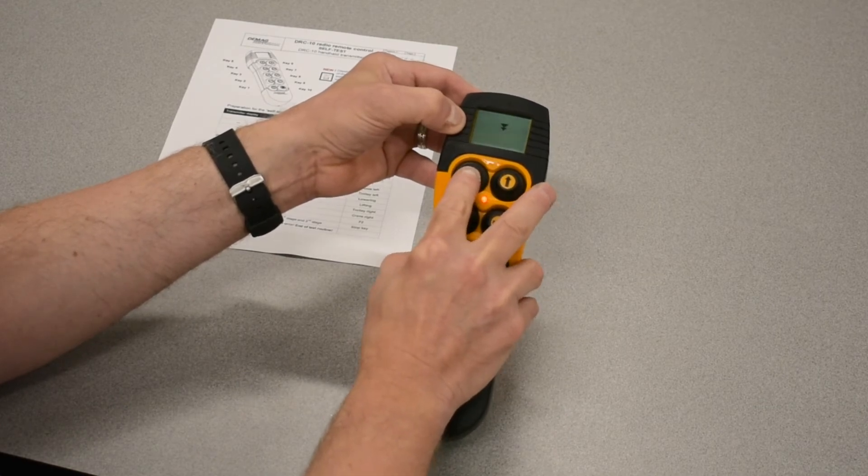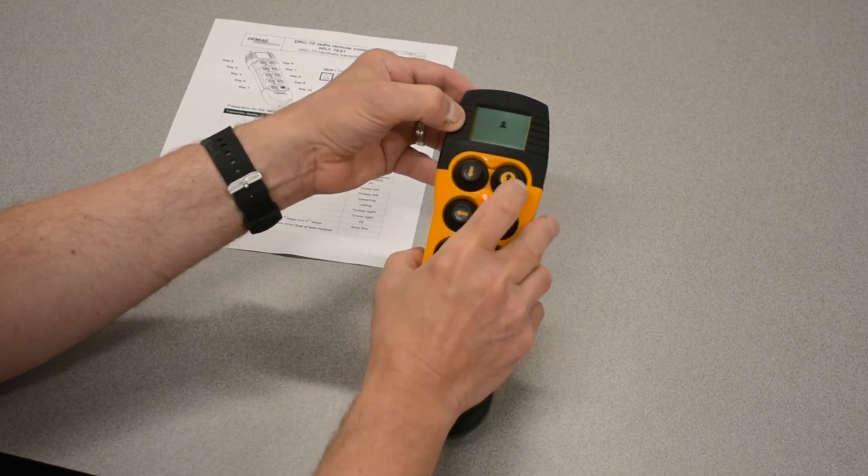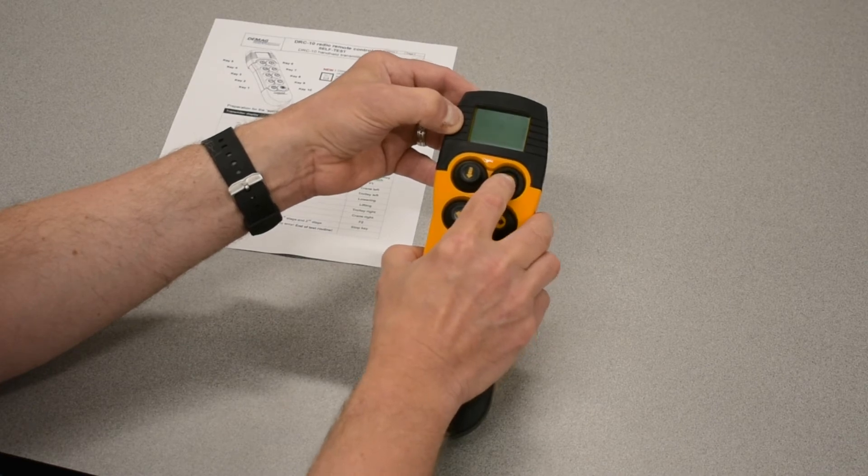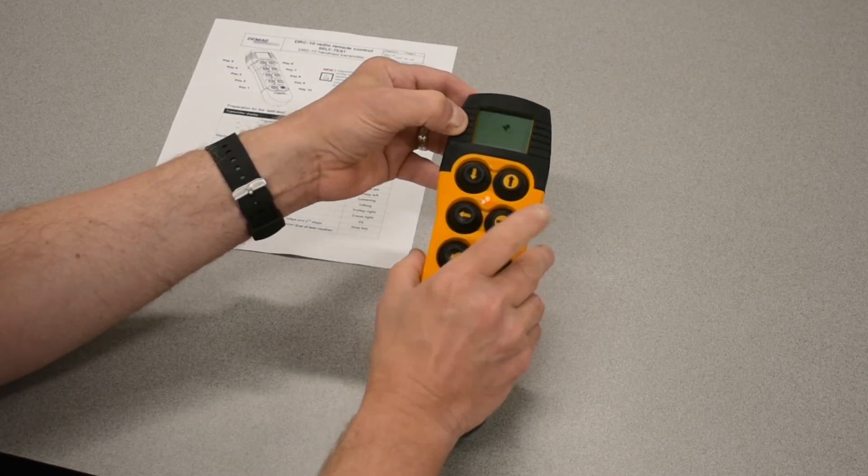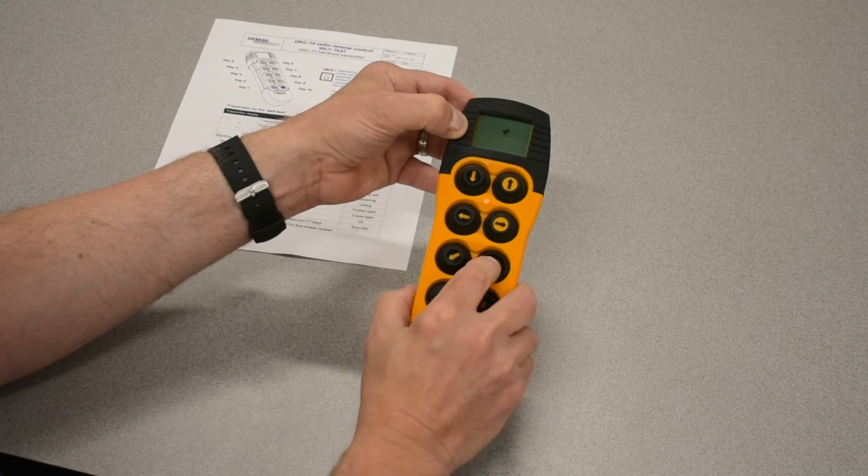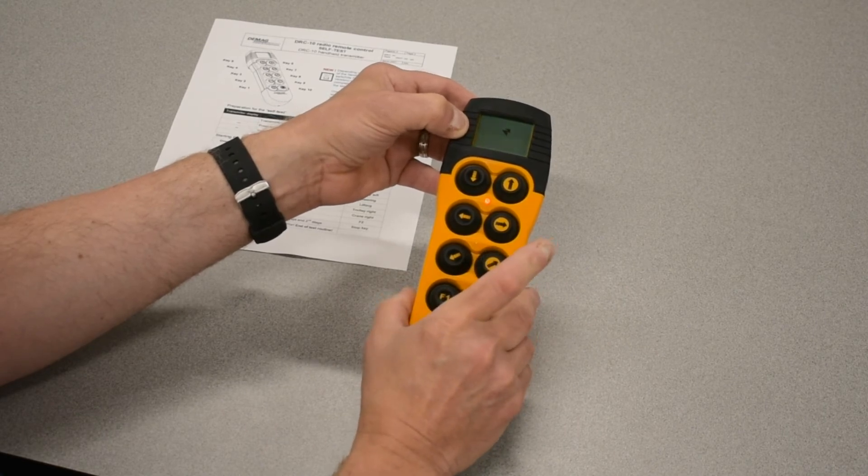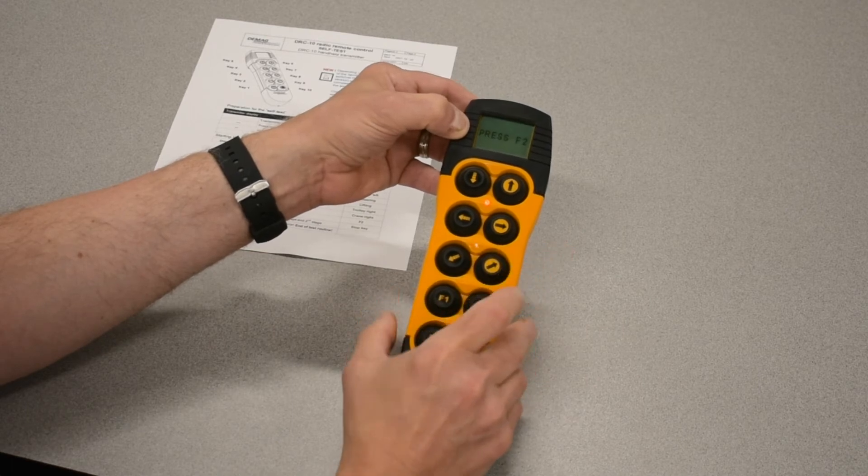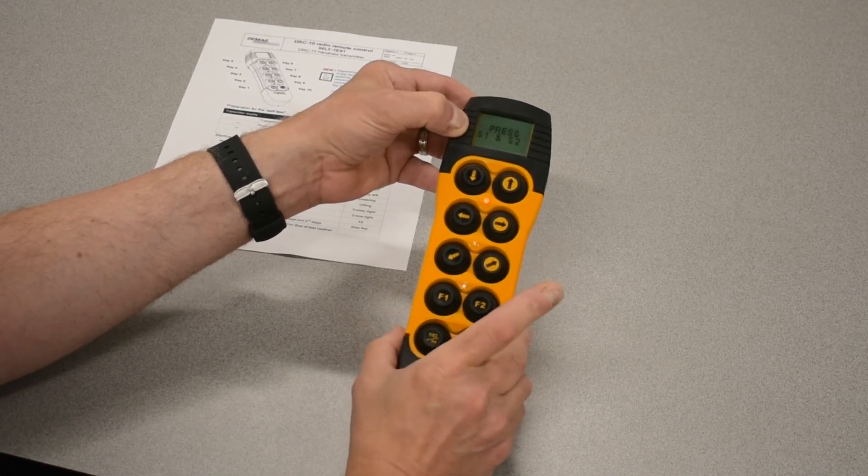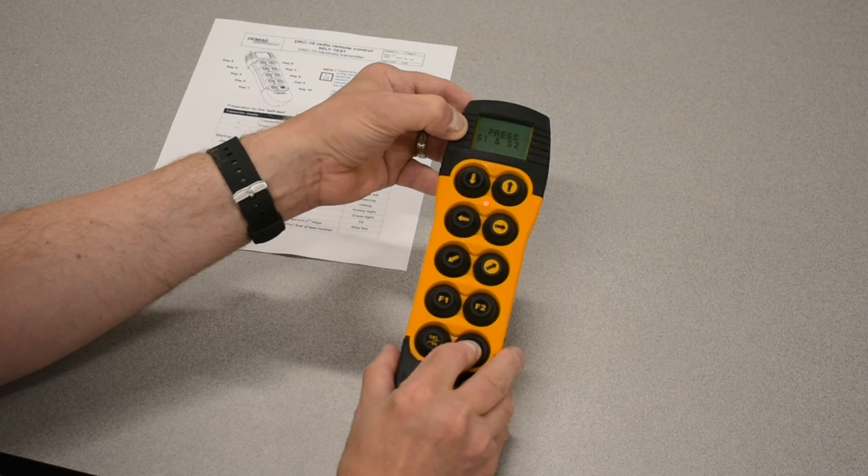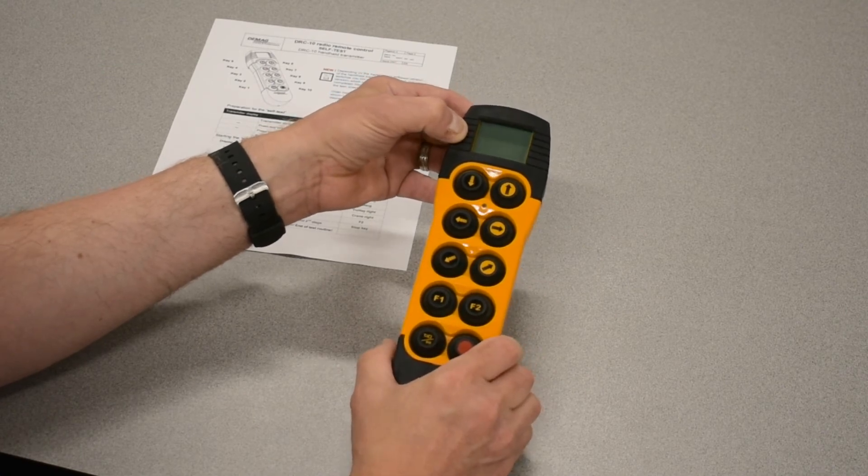If you miss it, try again slowly. Lift, trolley right, bridge opposite direction. Again if you miss it, try it again slower. F2, stop first, then second and it tells me I'm done.